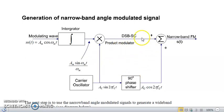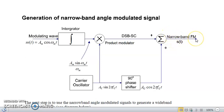Just to revise: in the indirect method there are two steps involved. In the first step we have to generate a narrowband FM signal, and in the second step from this narrowband FM signal we have to generate a wideband FM signal of infinite bandwidth and infinite sidebands.